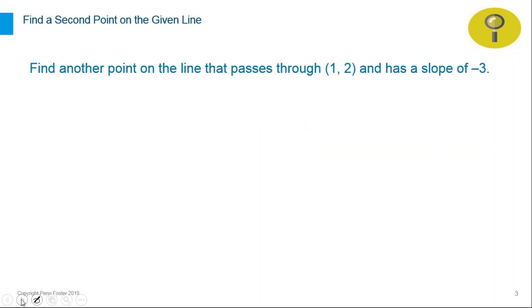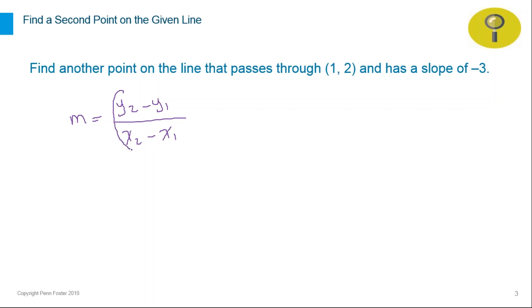Let's look at a problem: find another point on the line that passes through the point (1, 2) and has a slope of negative three. How can we find the other point — any other point on that line — given that this line passes through a specific point and has a specific slope? Let's write the formula: m equals y2 minus y1 divided by x2 minus x1. We have one point, so one part represents that point and the other part represents the second point we need.